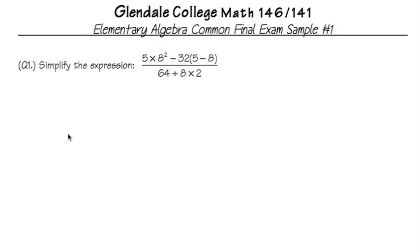For the first question, we are going to simplify the expression and we have a fraction right here. In this case we just have to work out the order of operations and I'm going to show you this way. Let's just focus on the top first, the numerator, which we have 5 times 8 squared minus 32 parenthesis 5 minus 8. It's important to know what do we need to do first?